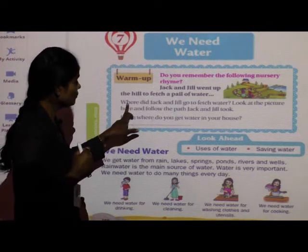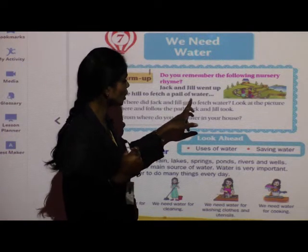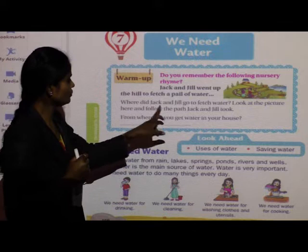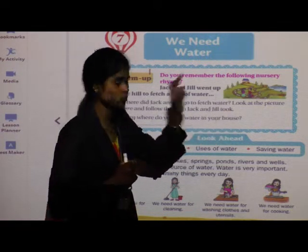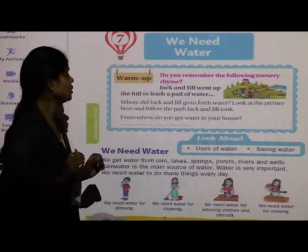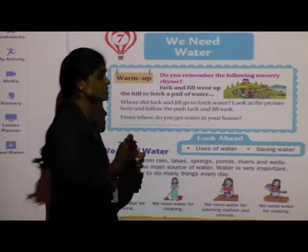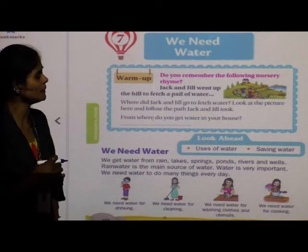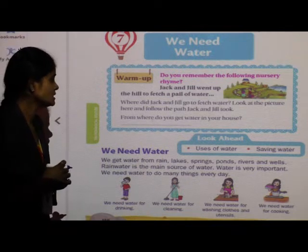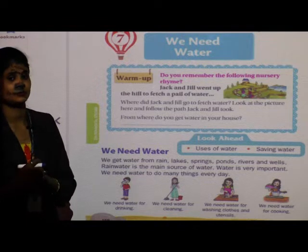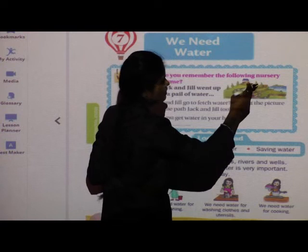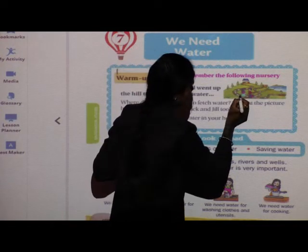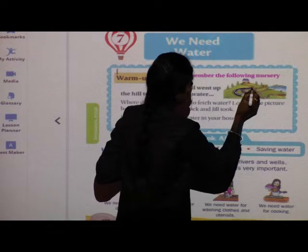Now, where did Jack and Jill go to fetch water? Look at the picture and follow the path Jack and Jill took. In this picture, you have to follow the path they took to fetch a pail of water. Can you see the picture of a well? They went up the hill to fetch water. You can find out the way like this.